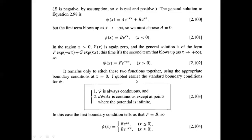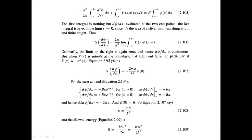We take the derivatives dψ/dx of the two solutions for x less than zero and x greater than zero, and find their difference. This difference equals the discontinuity we derived. Comparing both sides, with B equal to ψ(0) as the initial condition, we find that kappa equals m·alpha divided by ħ².